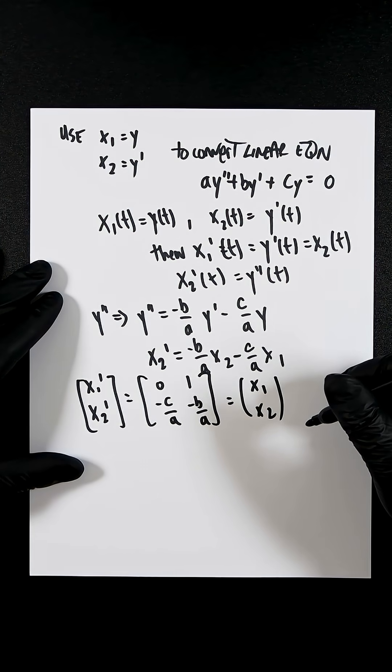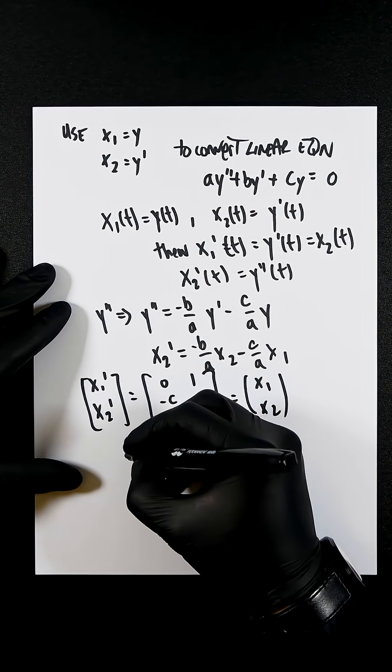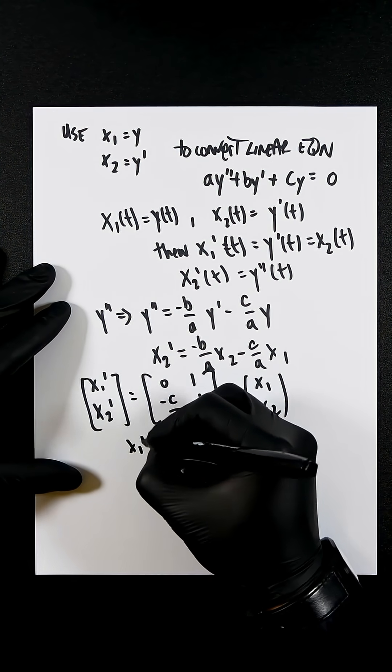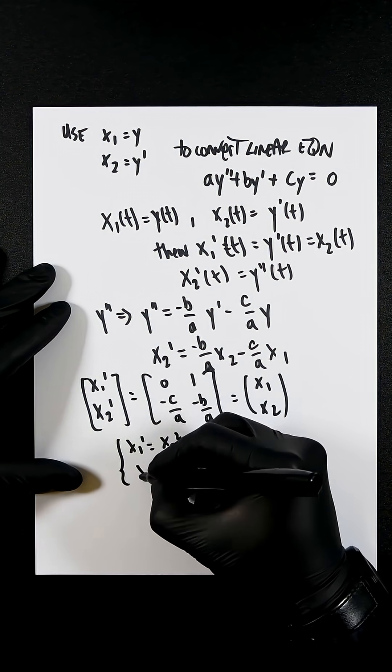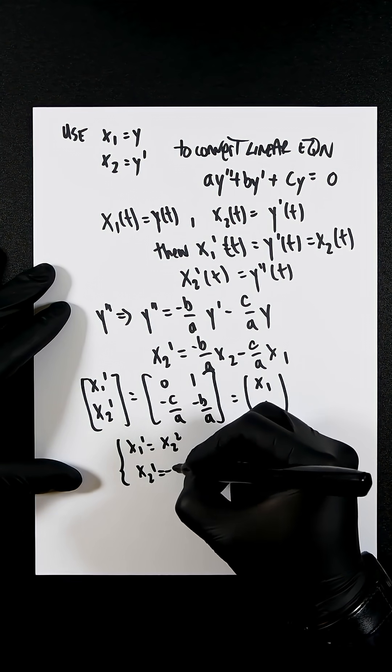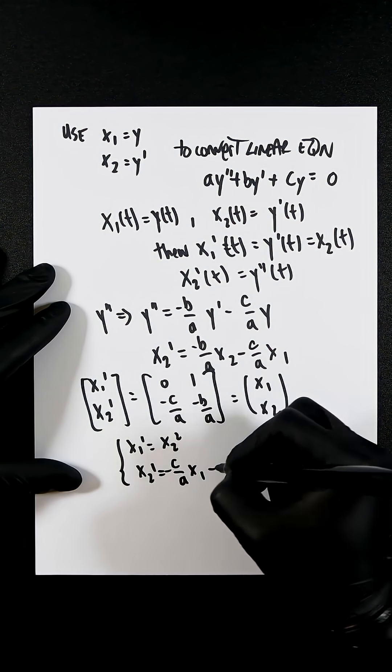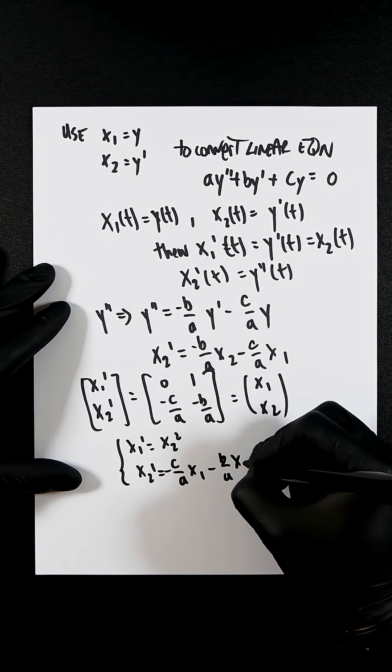So the normal system would be x1 dash equals x2 dash and x2 dash is equal to minus c over a x1 minus b over a x2.